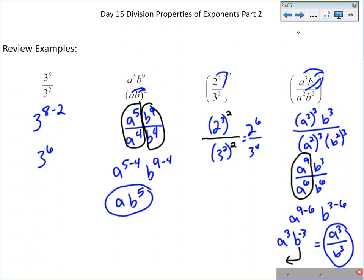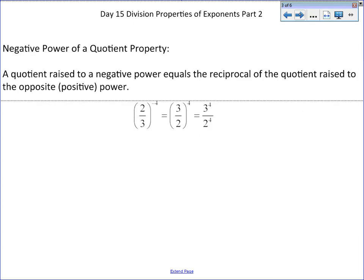Now we're going to take that and go one step further and learn today's. Today's is a negative power of a quotient property.